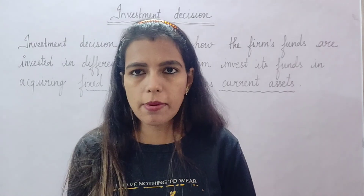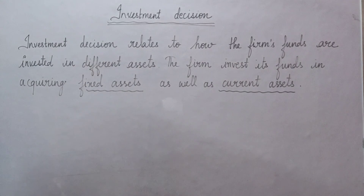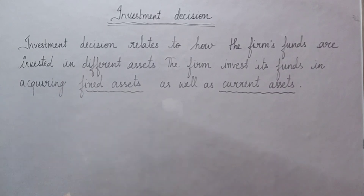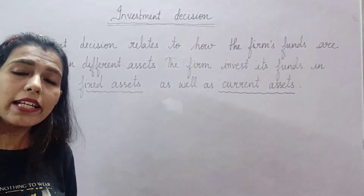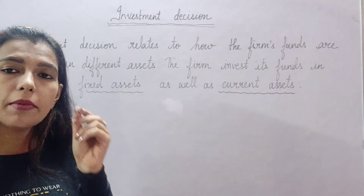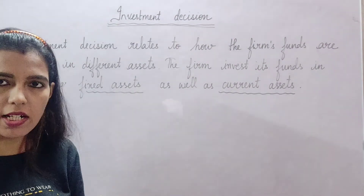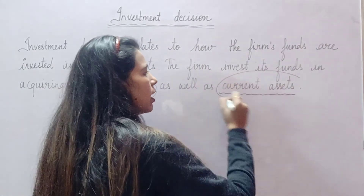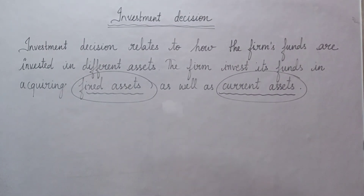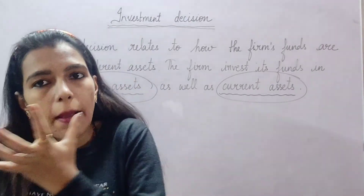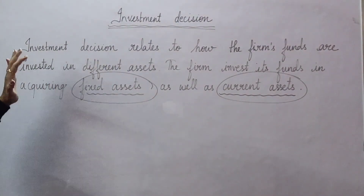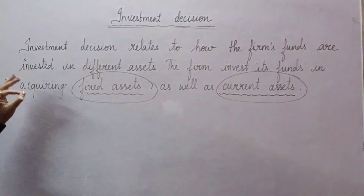Investment decision relates to how the firm's funds are invested in different assets — which assets to buy, how many fixed assets, how many current assets, how much money goes into fixed assets, how much into current assets. When the firm makes this decision, we call it investment decision. The firm invests funds in acquiring fixed assets as well as current assets.